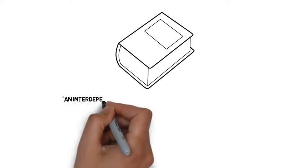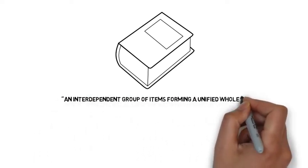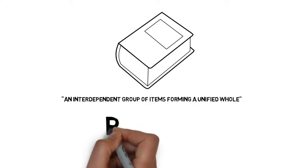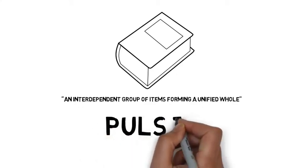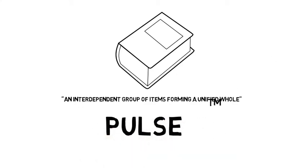Webster defines a system as an interdependent group of items forming a unified whole. Sounds pretty complicated for something as simple as Pulse. So let's take a look at Pulse components and how they play together.